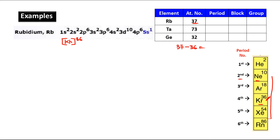That extra electron goes into 5s because Krypton is from the fourth period, meaning its last electron is in 4p. So the next electron must go into 5s. The electronic configuration is [Kr] 5s¹. For period: principal quantum number of valence shell is 5, so period = 5. Block: last electron enters s, so block = s. Group: for s-block, it is directly the number of valence electrons, which is 1. So group = 1.